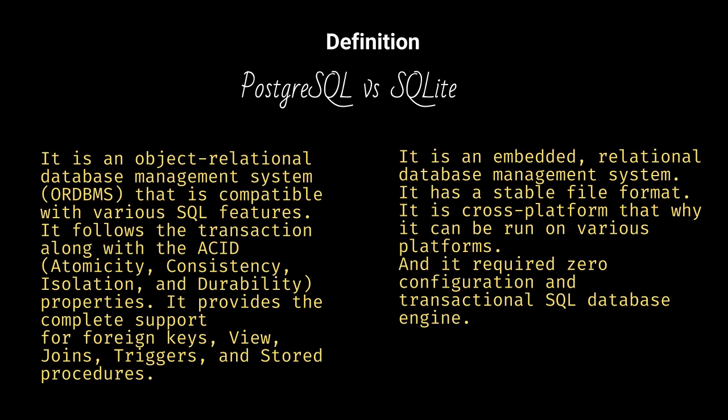PostgreSQL is an Object Relational Database Management System, ORDBMS, that is compatible with various SQL features. It follows the transaction along with the ACID — Atomicity, Consistency, Isolation, and Durability — properties.